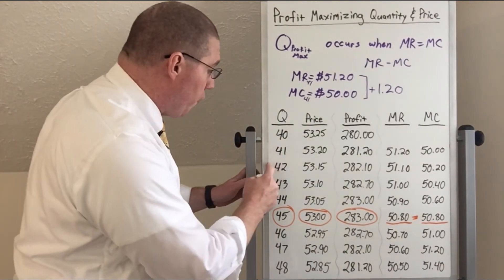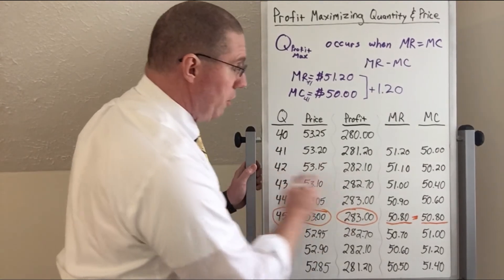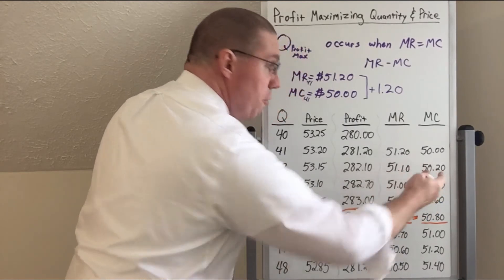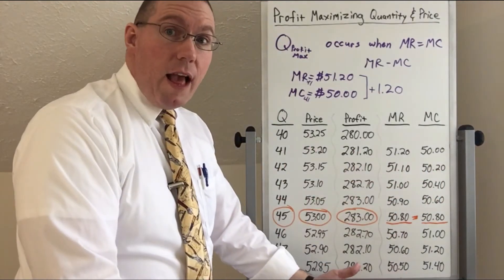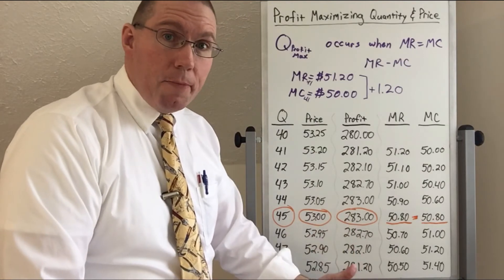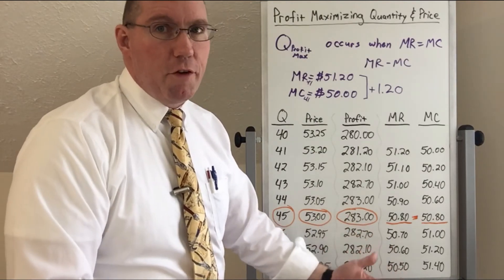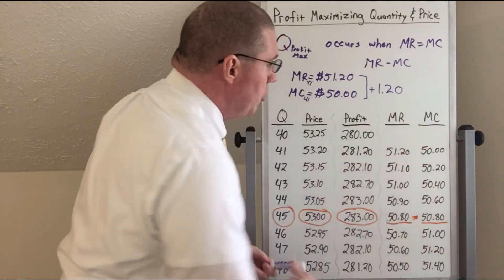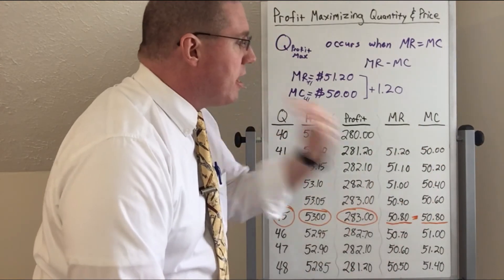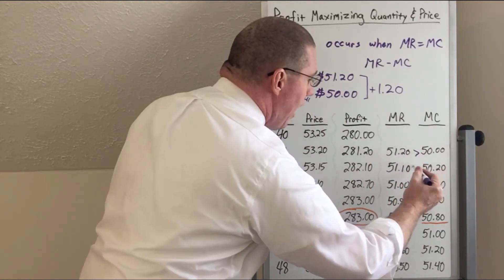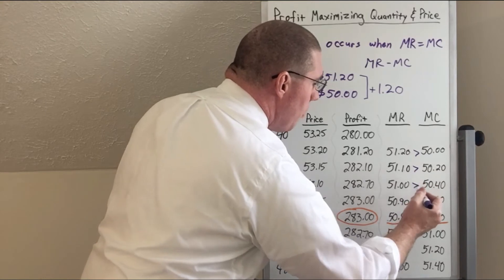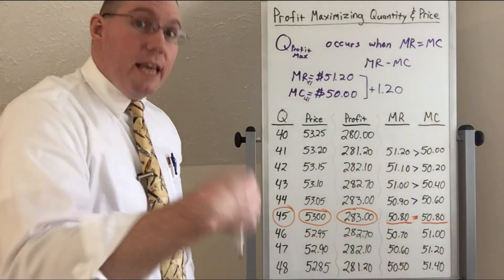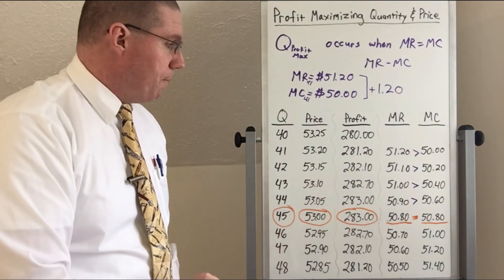Now we have to ask the same question going from 41 to 42. Going up to 42, our marginal revenue is $51.10 and our marginal cost is $50.20. The difference between them is $0.90 — we get another $0.90. Should we produce the 42nd unit? Yes. So as long as marginal revenue is greater than marginal cost, we should keep producing, because every additional unit is adding to our profit.